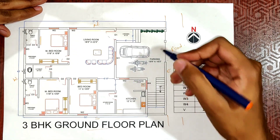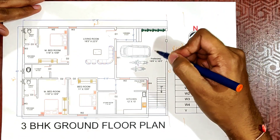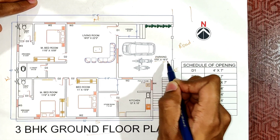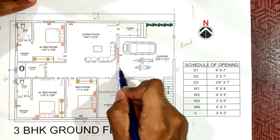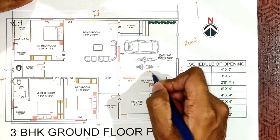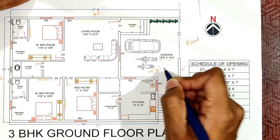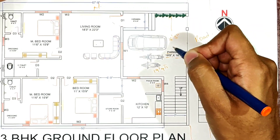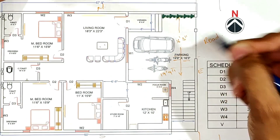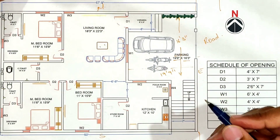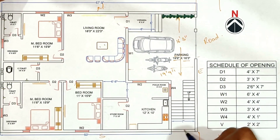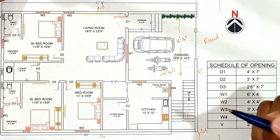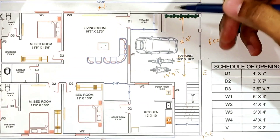This is the entrance. The parking area is 19 feet 9 inches by 16 inches. We are going to get the parking from the side, and from the side we will need a staircase. There is a gate on the south side.